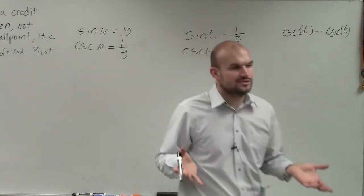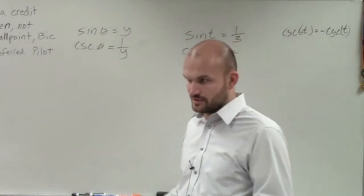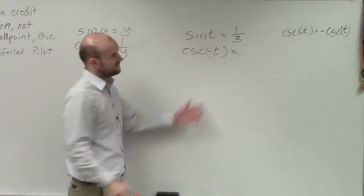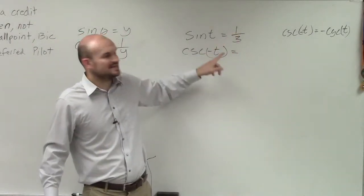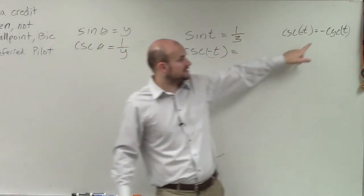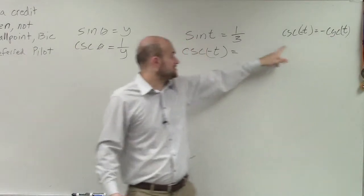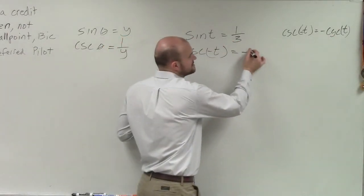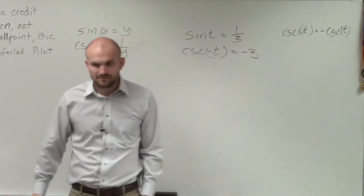These two functions are reciprocals of each other. So therefore, if this is 1/3, I need to not only take the negative value of it, because we know it's going to be multiplied by negative, but to relate it to the sine of negative t is now going to be the reciprocal, which would be a negative 3.